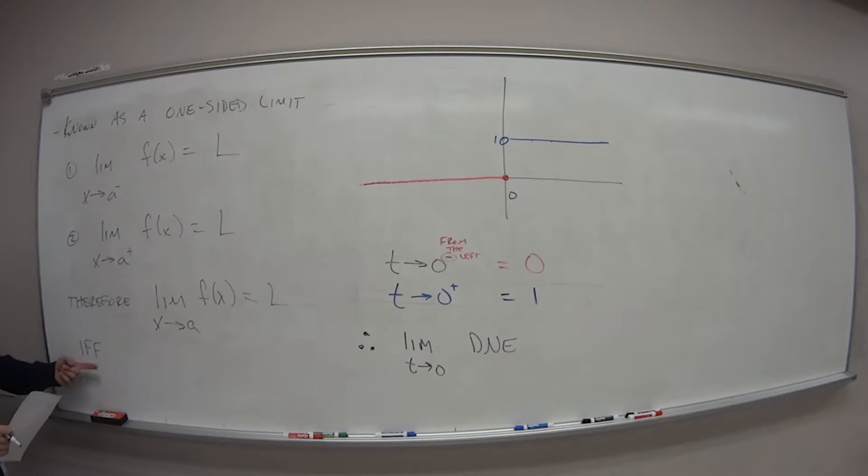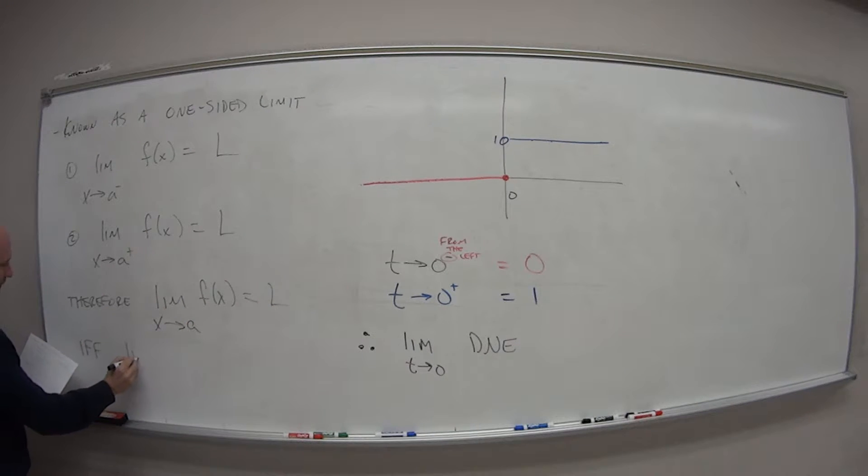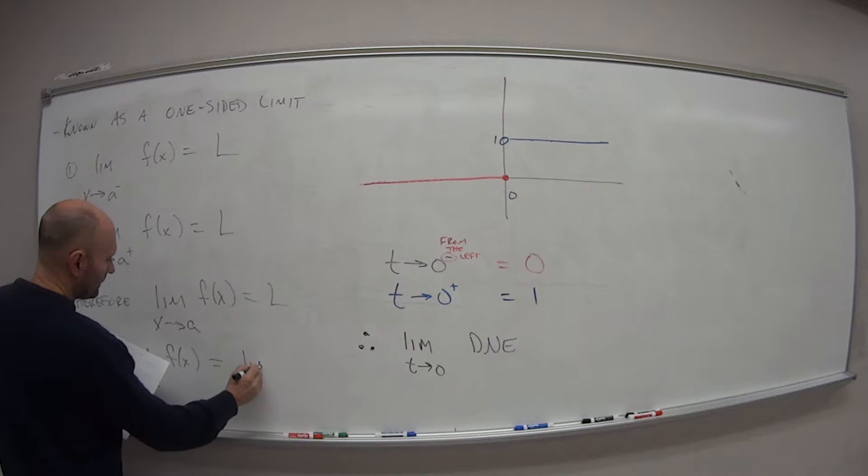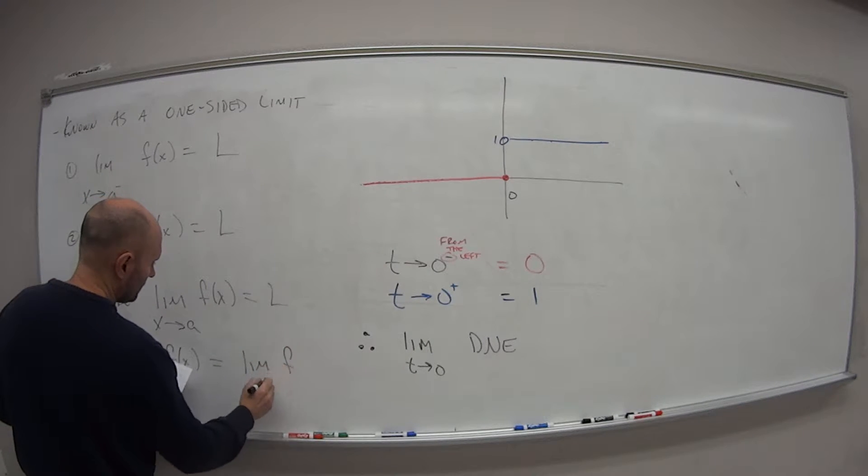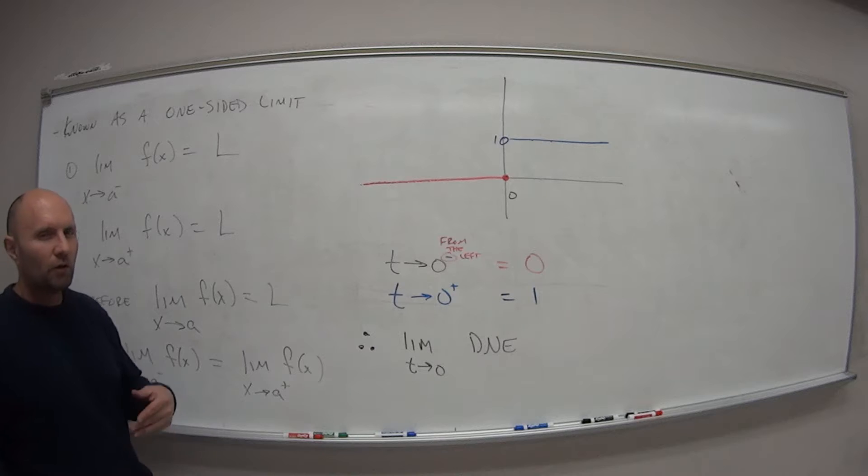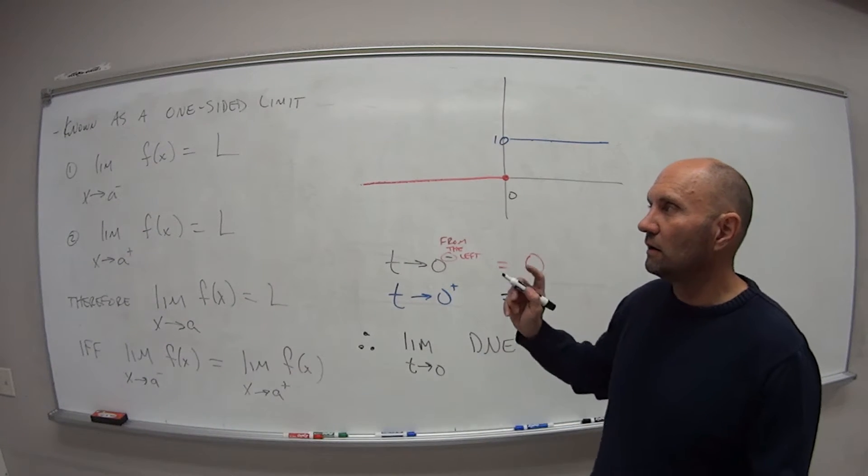So the limit as x approaches a from the left side of the function is the exact same as the limit as x approaches a from the right side of that function.